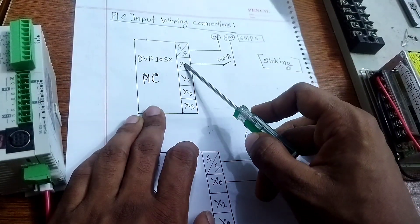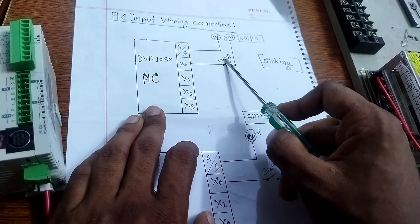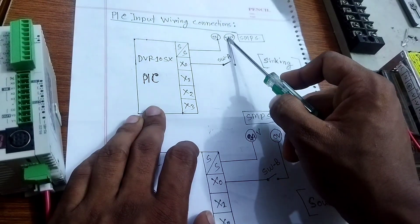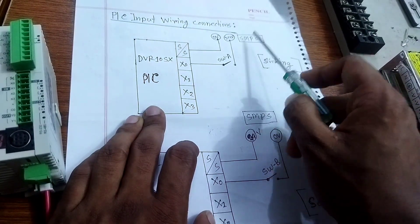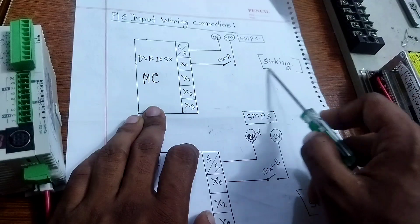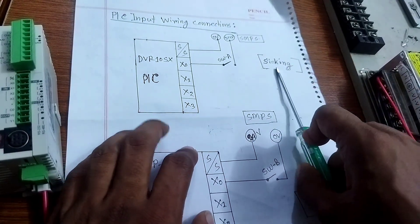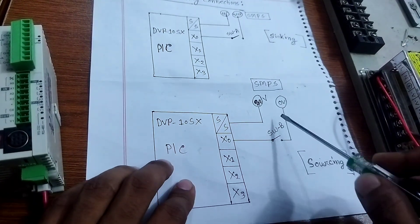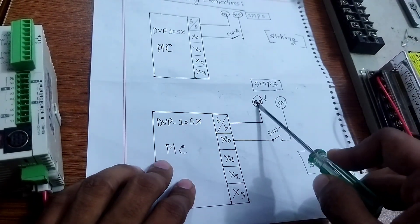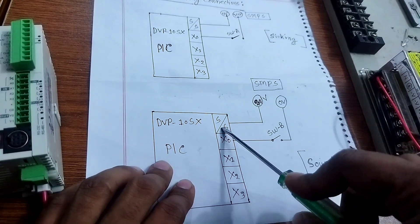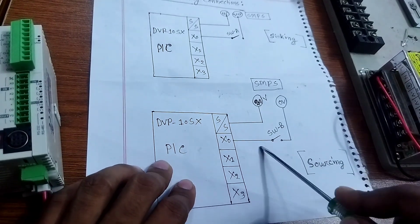This is sinking ordering for this PLC. In the next diagram, SMPS 24 volt connects to SS port, then X0 connects to switch B and zero volt to the SMPS. This PLC ordering is sourcing, or source ordering.